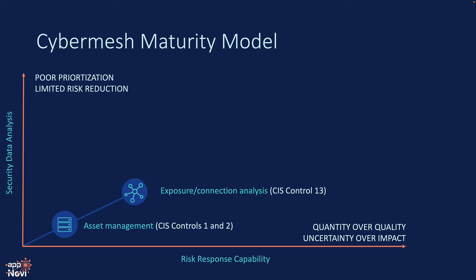Once we understand what our network contains and how it connects, we can bring in security information to understand what threats are associated with each asset and its contextual exposure through connections. For example, we can identify if an unmonitored vulnerable asset is exposed to the internet. This is often in support of CIS Core Control 7.